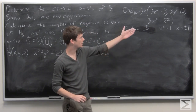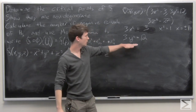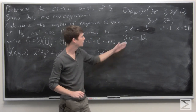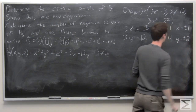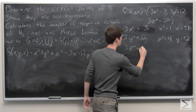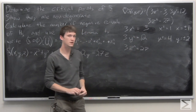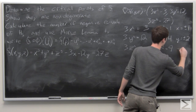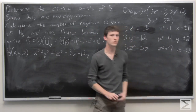Similarly, setting the second component equal to zero and bringing 12 to the other side gives 3y² = 12, so y² = 4, meaning y = ±2. Setting the third component equal to zero gives 3z² = 27, so z² = 9, meaning z = ±3. The partial derivative of f with respect to z is 3z² − 27.